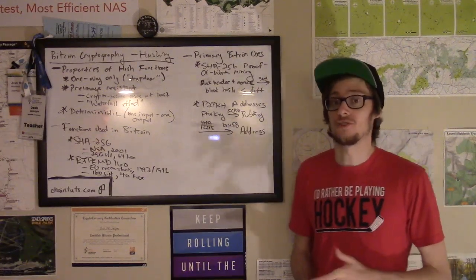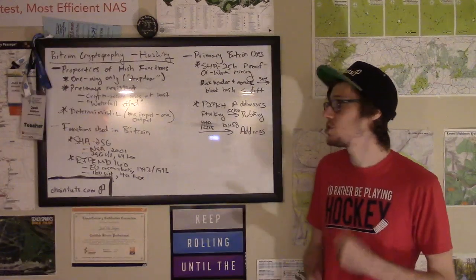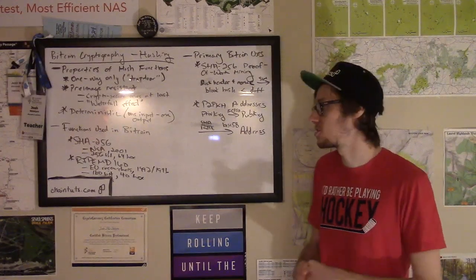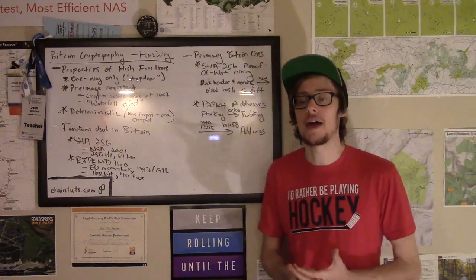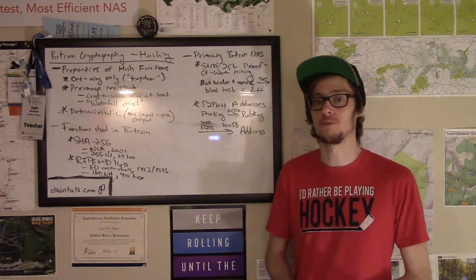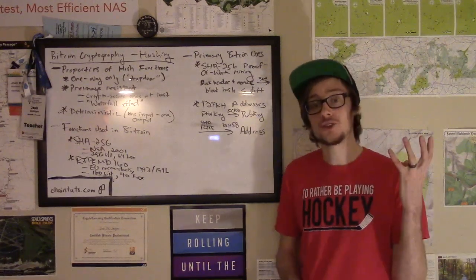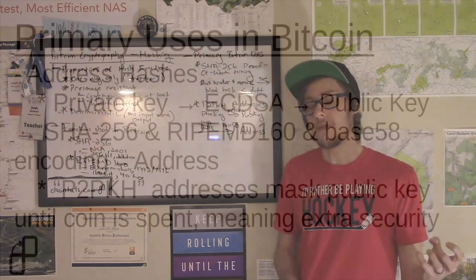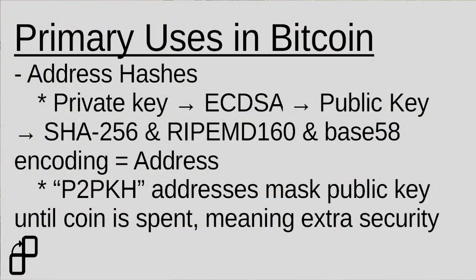Now, another really interesting application of hashing is with pay to public key hash addresses. Many of you might understand that Bitcoin uses a public private key infrastructure or asymmetric cryptography as part of generating addresses. So you have a private key that is run through a cryptographic algorithm called elliptic curve algorithm, and that gives you a public key at the end. But when you send Bitcoin to somebody's Bitcoin address, you're not actually sending it directly to the public key. What you're really sending it to is a hash of the public key.